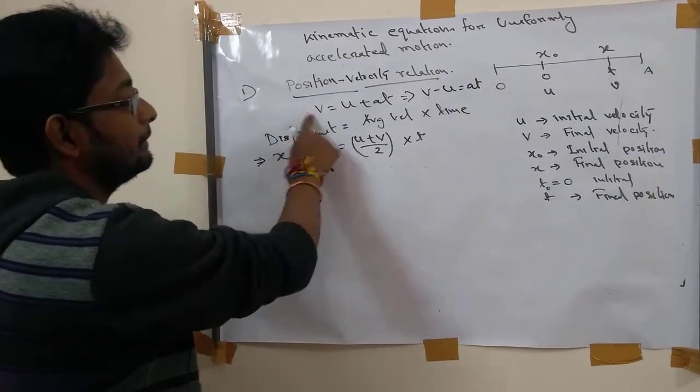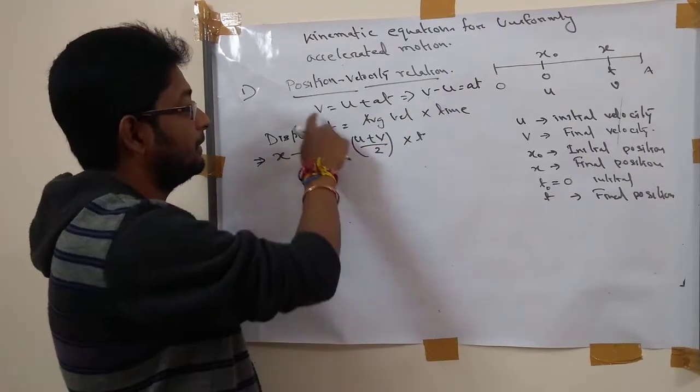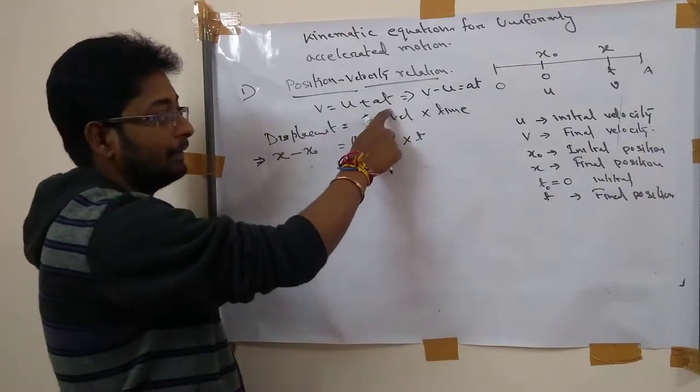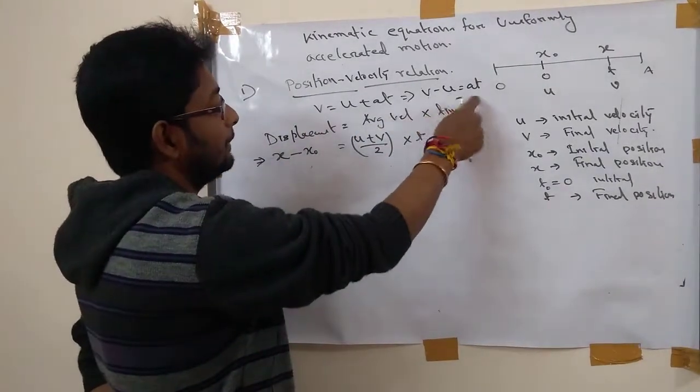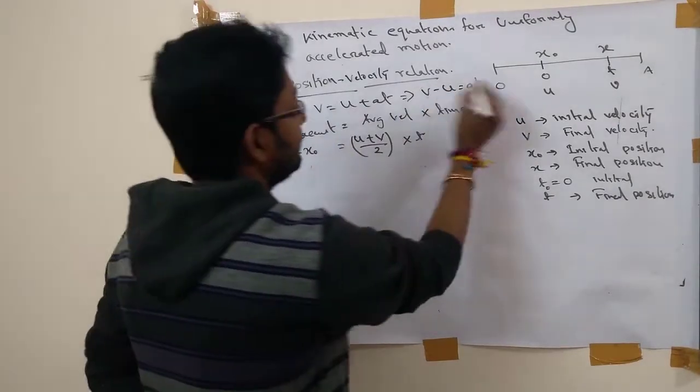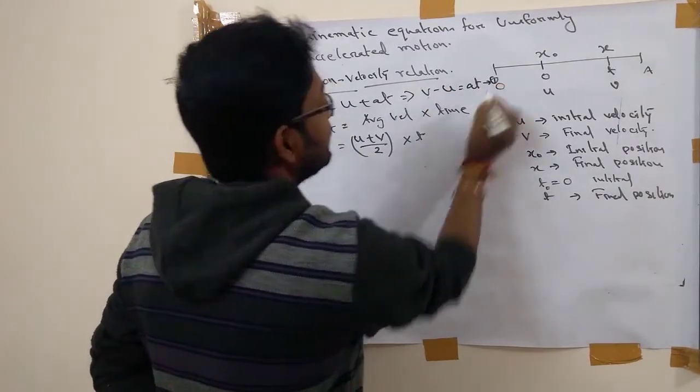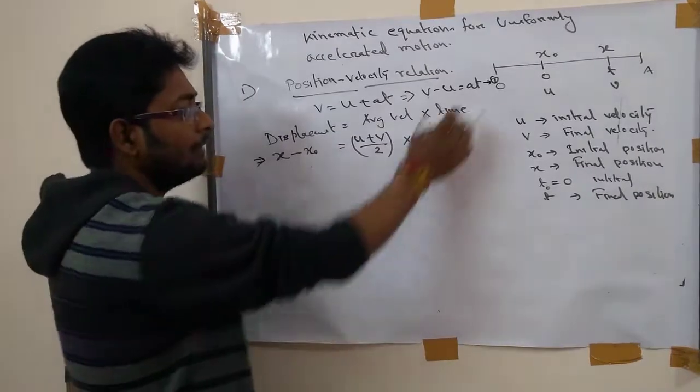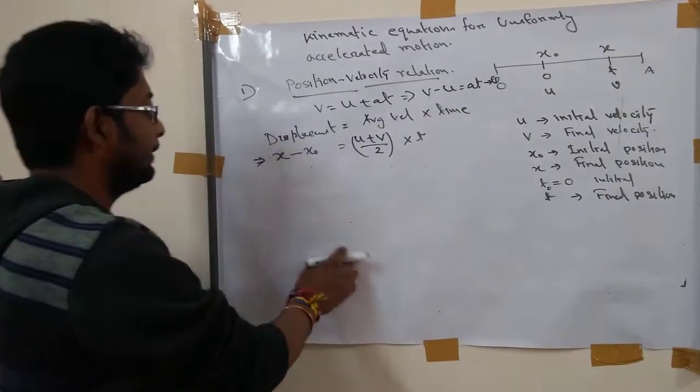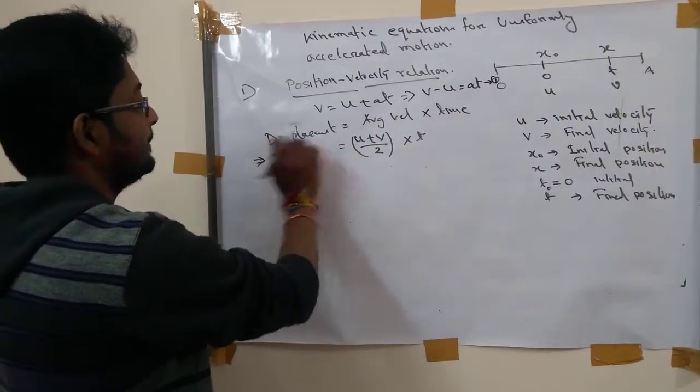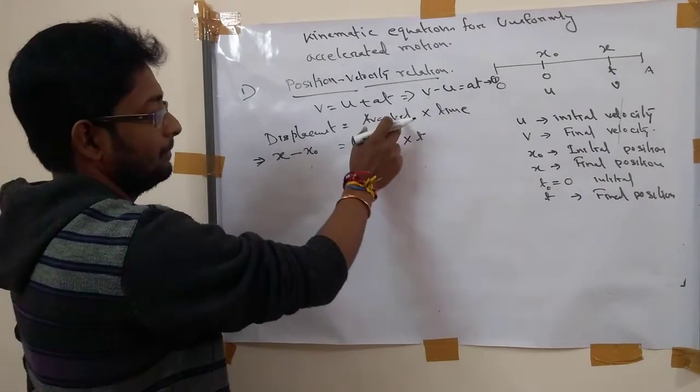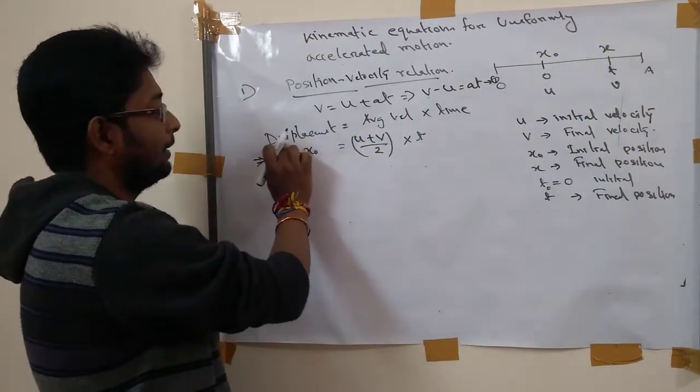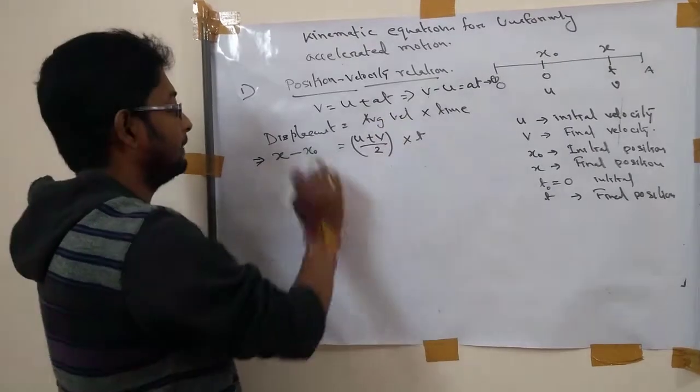First, this is the velocity time relationship: v equal to u plus at. Then v minus u equal to at. This is equation number 1. Then we know that displacement equal to average velocity into time. That is, velocity equal to displacement per time. So displacement equal to average velocity into time.